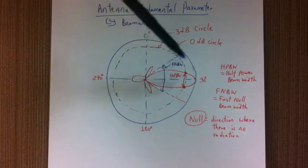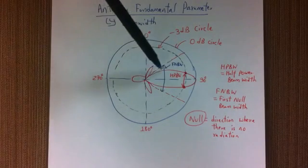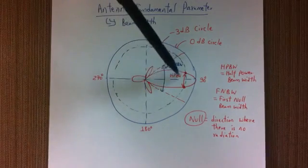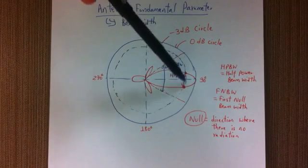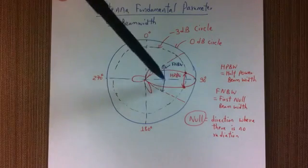This is usually bigger than your half power beam width. These are measured in degrees, so suppose this is 30 degrees, then this could be 50 degrees.